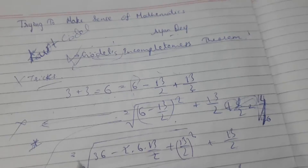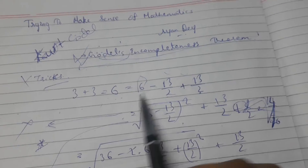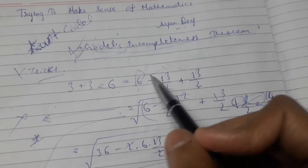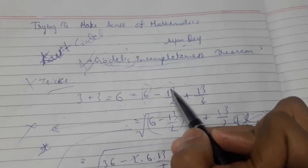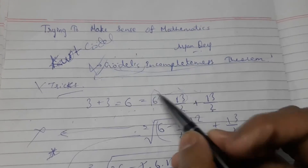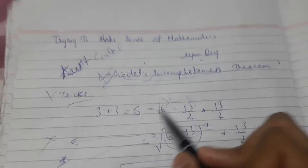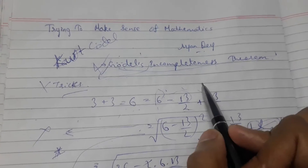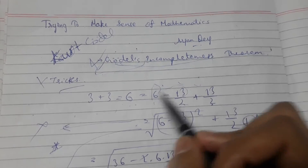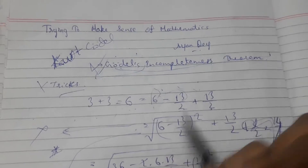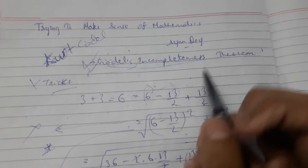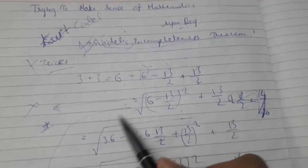There are many tricks — like 3 plus 3. We take 6 minus 7/2 plus 7/2. Why did we take 13/2? Because the trick is to take something over 2, and that something will be that number times 2 minus 1. That's 6 times 2 is 12, plus 1 is 13.